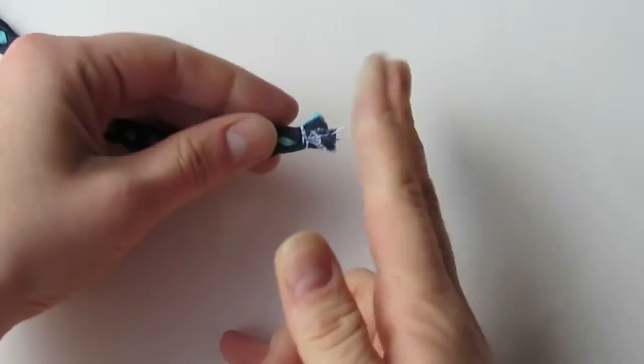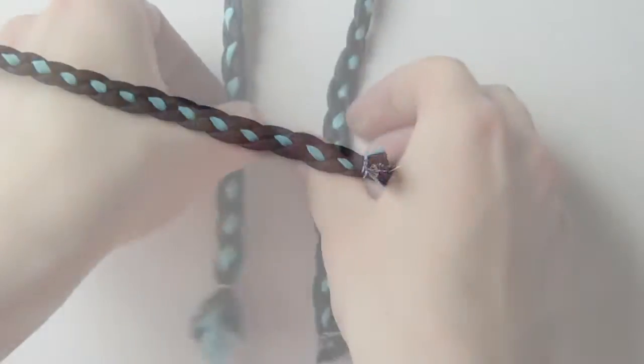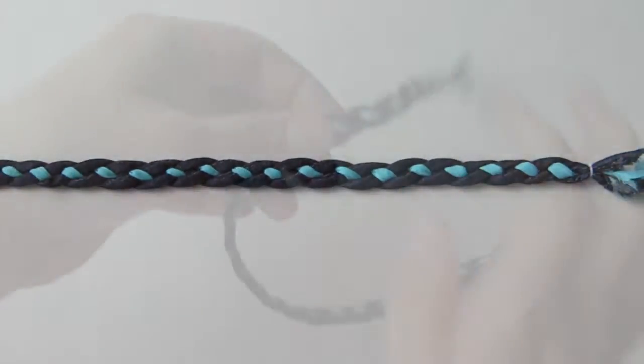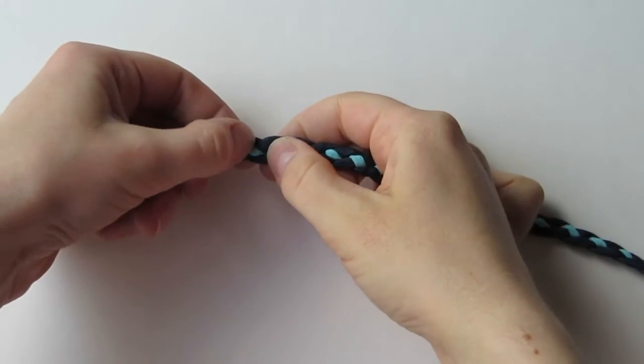Stitch across the lower end of your braid to keep all of the ends together, and then clip off any extra. Give your braid a good press, and then you're ready to start putting it into whatever project you want.